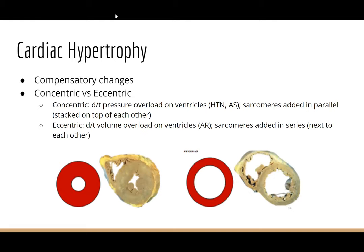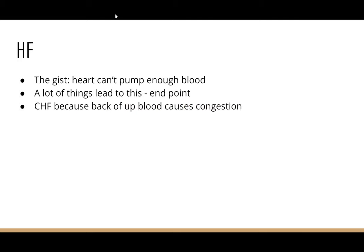Cardiac hypertrophy is a compensatory change — the heart grows in response to stress. Concentric hypertrophy is due to pressure overload, as in hypertension or aortic stenosis. Sarcomeres are added in parallel, stacking on top of each other to withstand that pressure. Eccentric hypertrophy is due to volume overload, as in aortic regurgitation or heart failure — sarcomeres are added in series to accommodate a larger volume, so the chamber dilates.